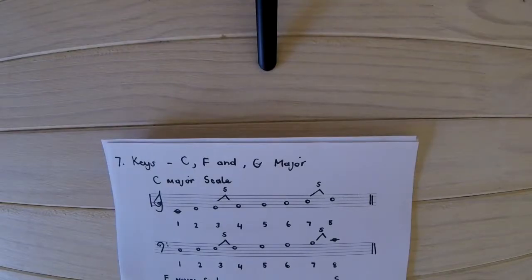In this video we will be discussing the different keys or scales, the C major scale, F major scale and G major scale. These are the three scales that you need to know for the Grade 1 Trinity College Theory.